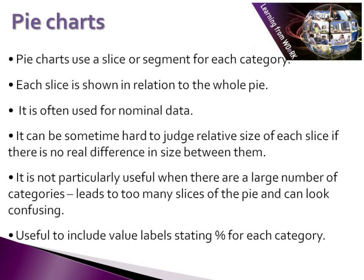It's always useful to remember when thinking about pie charts that it's only useful to represent data where there actually is a relative difference between each type of category. Sometimes it can be hard to judge the relative difference of each slice if there's no real difference between the size of them. So if we have our population and we look at the gender of that population, if 50% are male and 50% are female, on a pie chart it doesn't really show us anything of any value because there's no difference at all between the two slices of the pie.